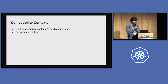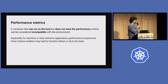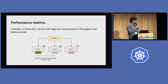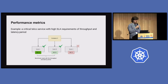The second compatibility context is performance metrics. It's about whether a container can run on the host, but if it doesn't meet performance criteria it can be considered incompatible. This is especially valid for real-time or near-real-time applications like telco services with very high SLA requirements. For example, we might have a critical telco service with high throughput and latency SLA requirements. Container X could theoretically work on all nodes, but benchmarks show it doesn't perform well with NIC C — so we consider the container incompatible with that node.